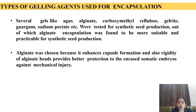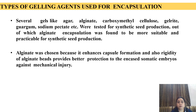Types of gelling agents: Several gels are used including agar, alginate, carboxymethylcellulose, gelrite, gorgam gum, sodium alginate, etc. Alginate encapsulation was more practicable for synthetic seed production. Alginate was chosen because it enhanced capsule formation and also the rigidity of alginate beads, providing better protection.